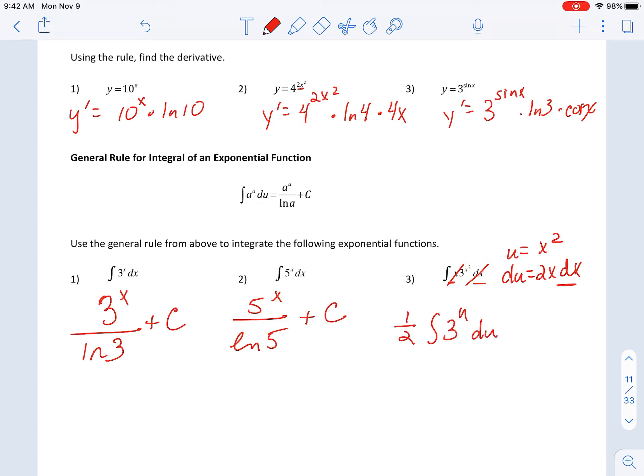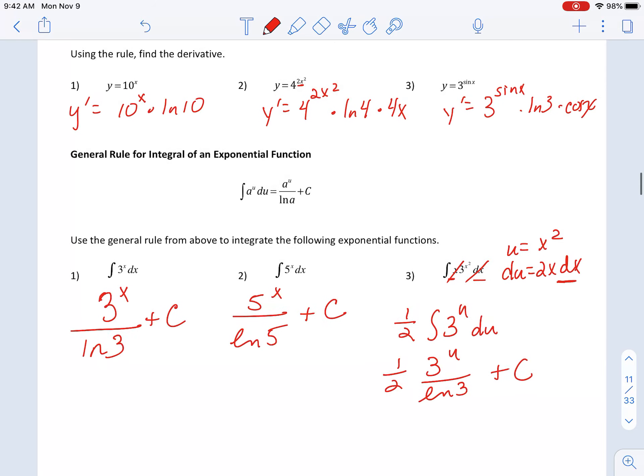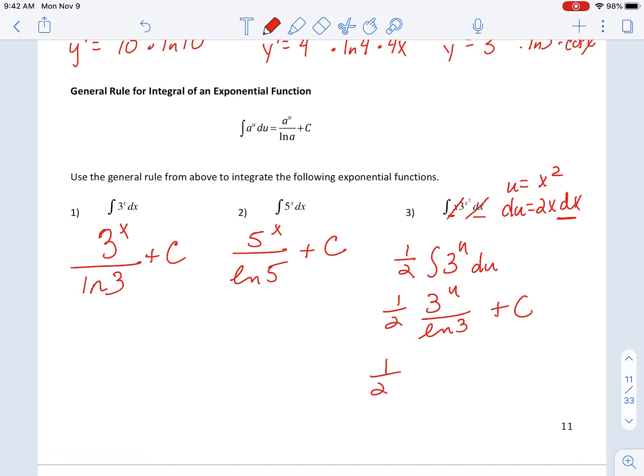So rewrite doing our u substitution idea. Antiderivative of 3 to the u is 3 to the u divided by ln of 3 plus c. And then let's go ahead and just substitute back in our u, which was x squared.